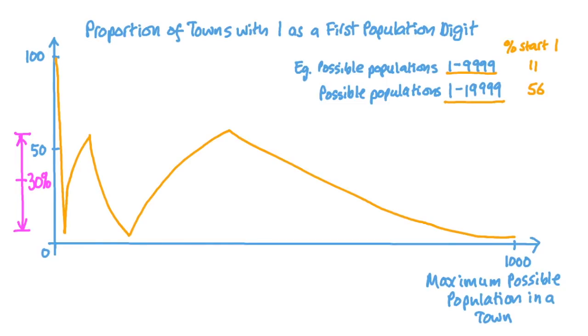Benford's law, then, isn't actually a mysterious law of anomalous numbers saying that ones appear much more often than you'd think. It's just a simple observation that depending on where you start and stop counting, more or fewer of the numbers will begin with one.